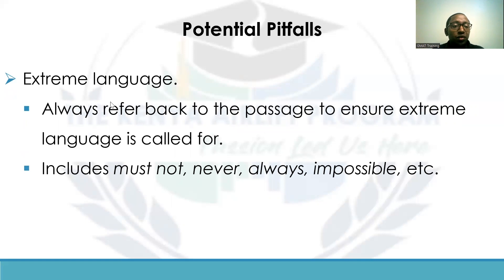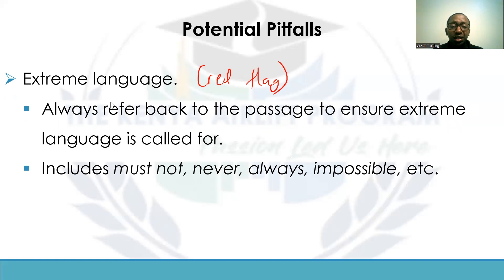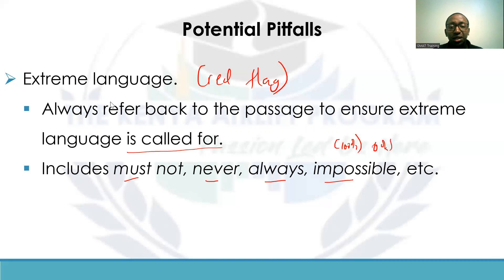Another potential pitfall is extreme language. This is a red flag, but it's not always wrong. Mostly when you see extreme language it's more often than not a wrong choice, but sometimes these extreme language choices are actually correct. Do not just eliminate because it's extreme language — if you find such an answer, refer back to the passage to ensure the extreme language is called for, because the passage may actually validate it. Markers of extreme language include: must not, never, always, impossible — indicating either a 100% or 0% chance.